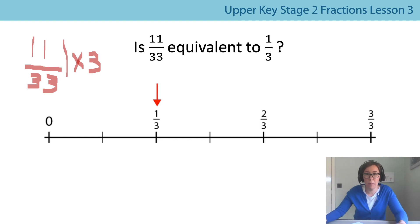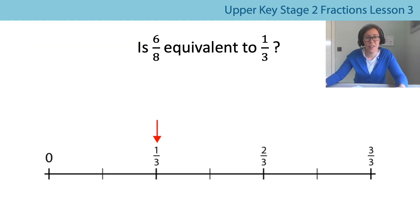Let's try another one. This time we've got six eighths. We have to do times by three. Now, does that work? Six times three is, count with me, six, twelve, yep you're right, eighteen. Well, that can't be right then, can it? So six eighths is not equivalent to one third.